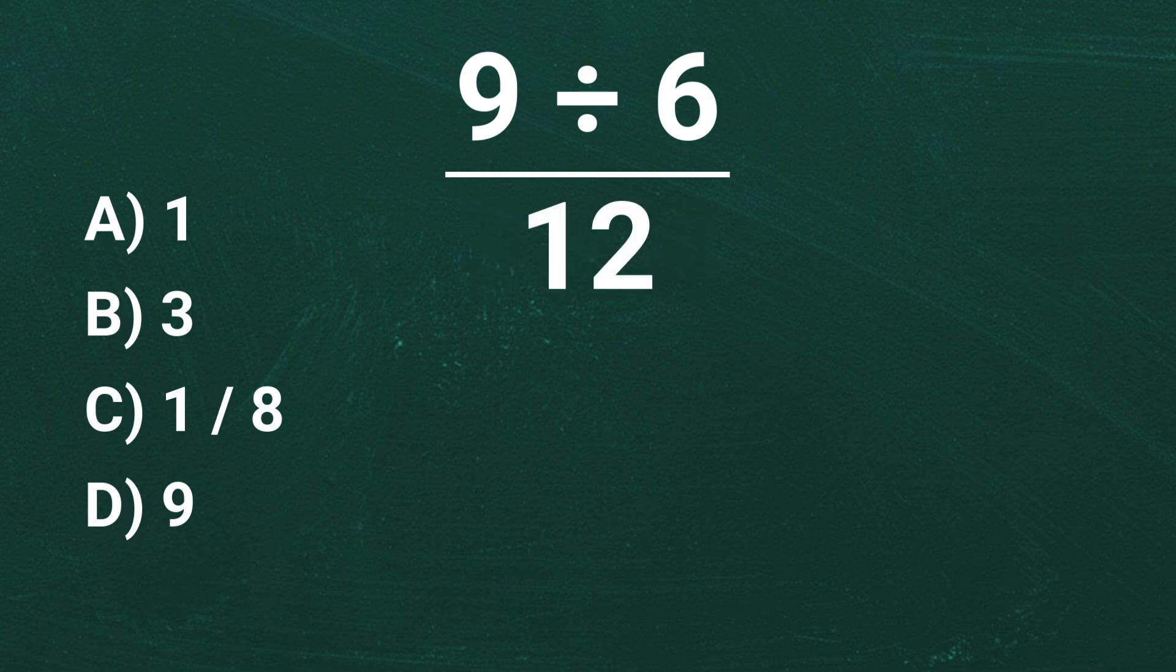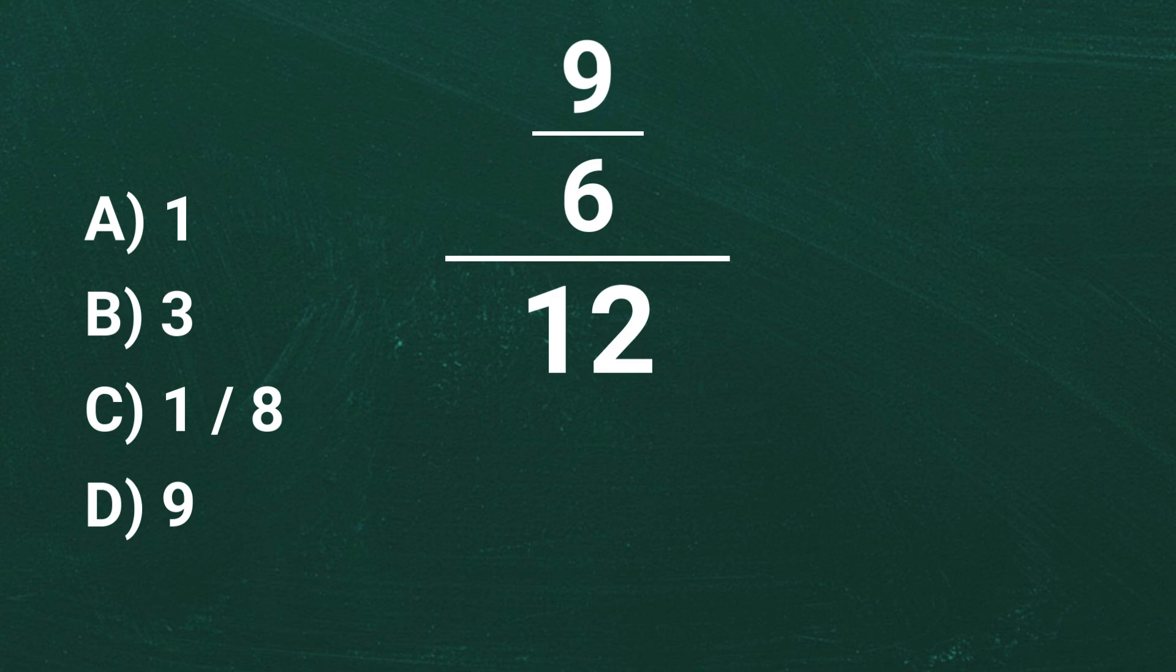Now let's rewrite 9 divided by 6 as a fraction. 9 divided by 6 is the same as writing it as a fraction 9 over 6. At this point we are divided by 12. But remember, dividing by a number is the same as multiplying by its reciprocal. That just means flip the number upside down.